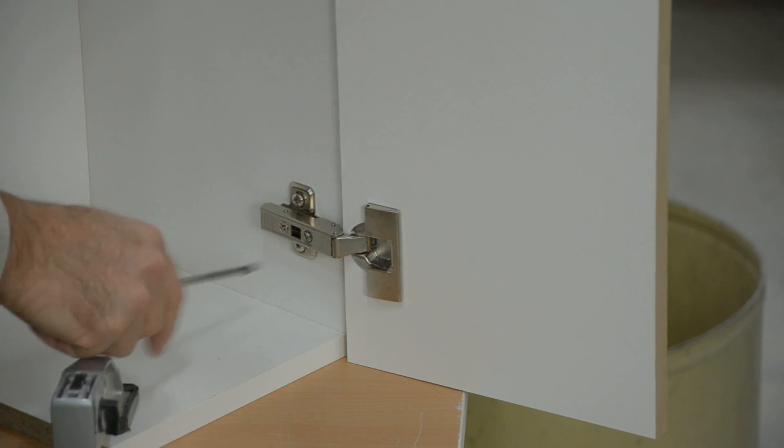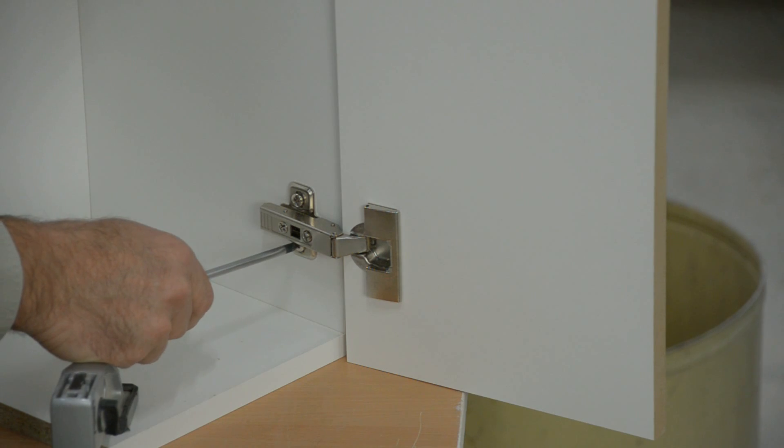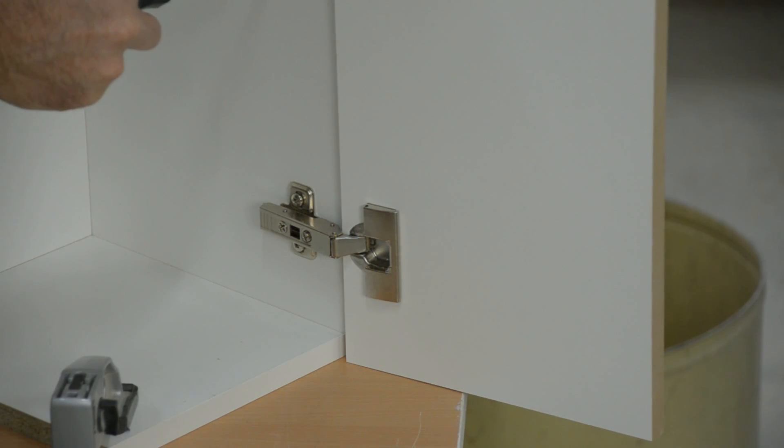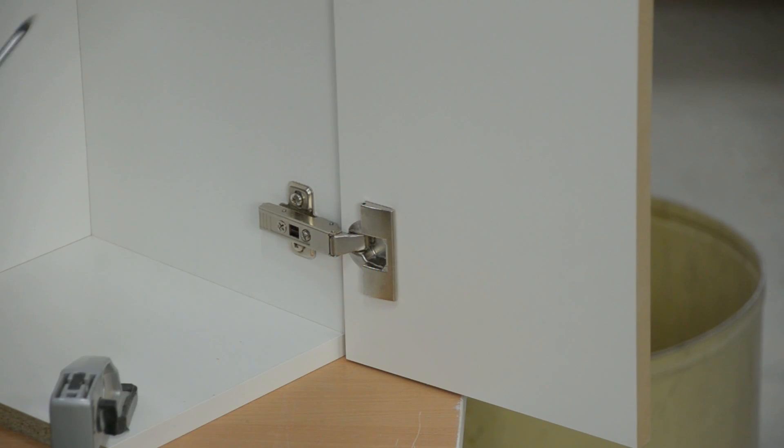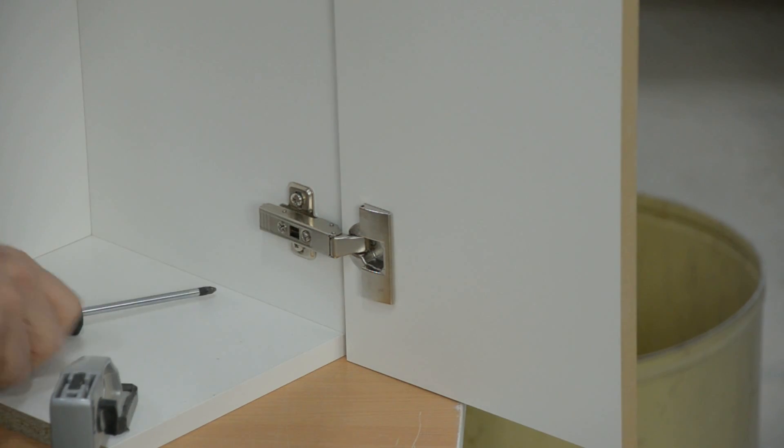And of course to move the door up and down, it's a matter of just releasing these hinges at the mounting plate. And then the door can be slid up. As you can see, there's the adjustment up. And of course you could have slid it down.